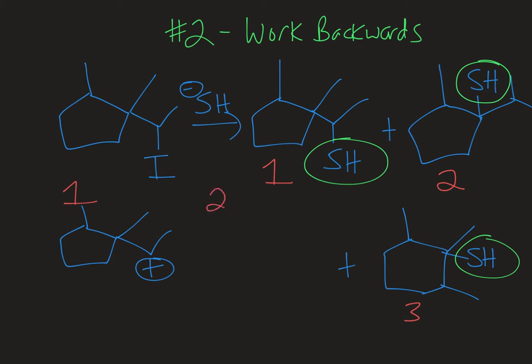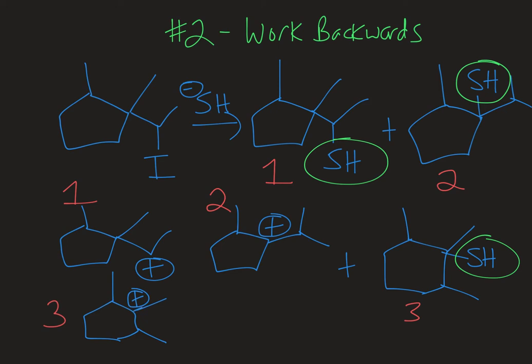For the second product, the carbocation would have been in a different spot — right where the nucleophile is for that species. And for the last product with the rearranged structure, the carbocation must have been at the carbon where the nucleophile ended up. Now that we know where we're going in terms of reactive intermediates, we can piece together the entire mechanism, because we also know how to start: the leaving group leaves.